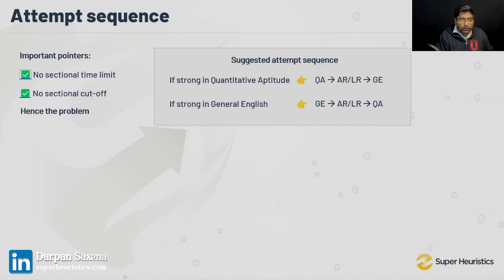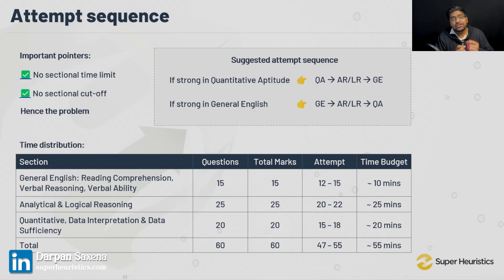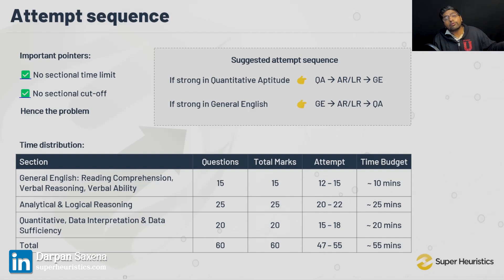That is not enough for you to know. You also need to know how much time to spend in each of these. This table will answer it for you — I've helped you budget how much time you should spend on each area. In General English, budget the first 10 minutes and try to attempt around 12 to 15 questions in that. That should be your attempts — I am not saying 12 to 15 correct, but target to attempt 12 to 15.